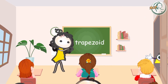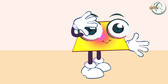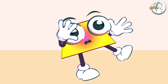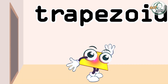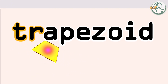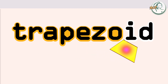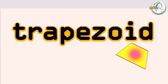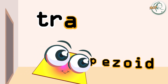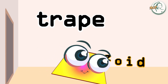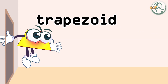Trapezoid. Okay, kids, can you spell the word trapezoid? No, it's wrong spelling. T-R-A-P-E-Z-O-I-D. Trapezoid.